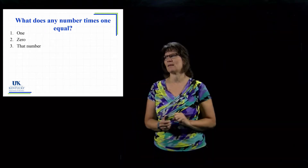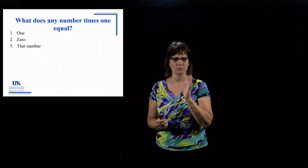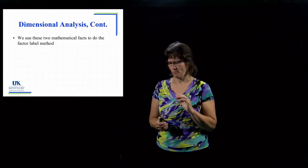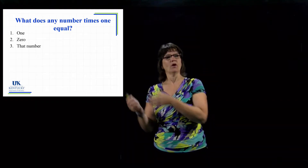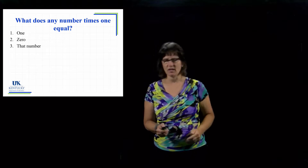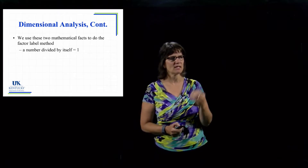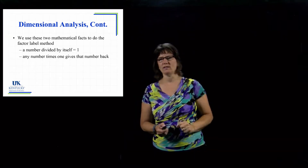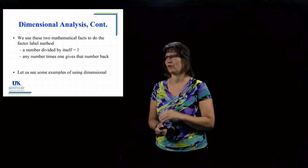The next mathematical concept we use: take any number and multiply by one — what do you get back? Pause, select one, and move on. If you said that number, that's correct. So 47 times 1 equals 47, and 0.1 times 1 equals 0.1. Anytime you multiply by one, you're not changing the number. We utilize these two concepts in dimensional analysis: any number divided by itself equals one, and anything times one gives you that number back. We take these glorified ones — these conversion factors — and attach them together to convert from one unit to another.